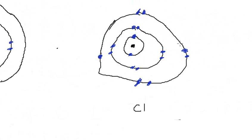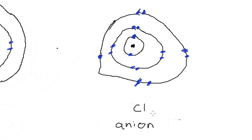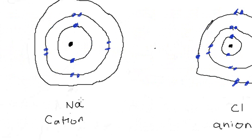Chlorine, on the other hand — is it easier to just get that one remaining electron it needs to complete its outer shell of eight, or to get rid of seven electrons? It's actually easier to just gain one. So chlorine is called an anion because anions gain electrons. Anions are going to be for the non-metals, and cations are going to be metals. Metals like to lose electrons and non-metals like to gain electrons.